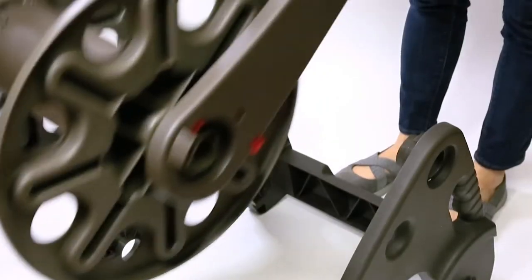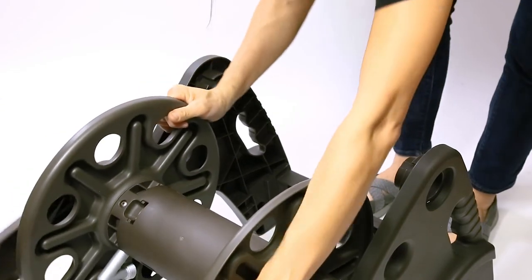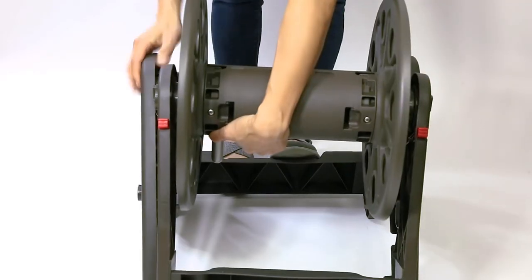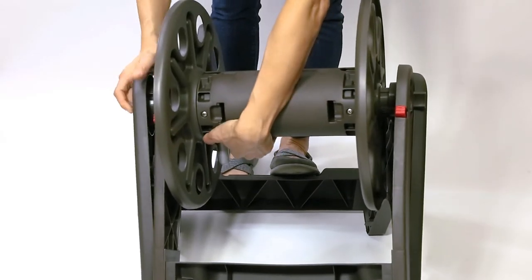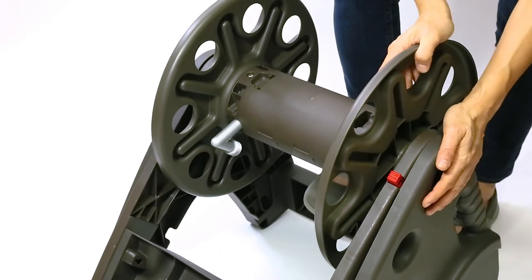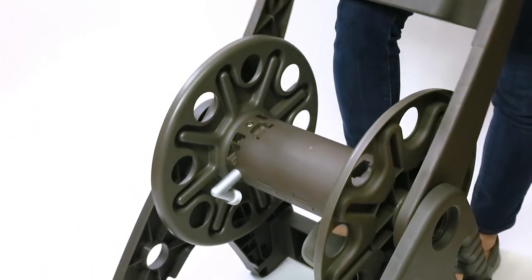Join the reel assembly to the frame mount. Swing the handle forward. Place the reel assembly in front of the mount. Flex the sides of the mount outward and slide the reel assembly into place. Do one side and then the other. Swing the handle back upward and it will snap into place.